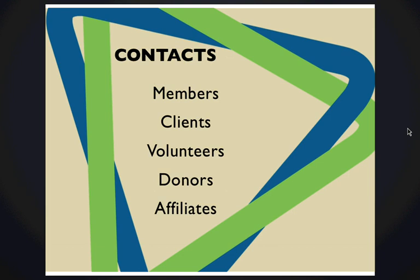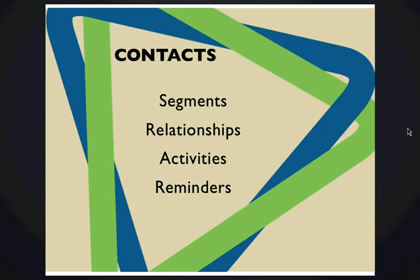The contacts tracked in the system could be members, clients, volunteers, donors, or affiliates. Any one of these can have its own set of data fields tracked within the system. They can be set up in different groups and filtered. Contacts can also be segmented further, and relationships can be created. For example, you can allow particular website access for a specific membership level, or grant access based on a corporate sponsorship. You can track activities and set reminders — it is a full-fledged CRM system that helps you organize, maintain, and track your contacts and database.